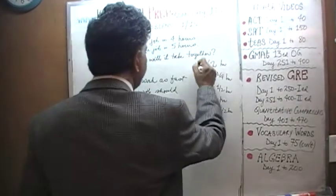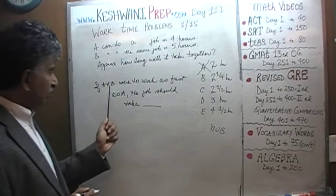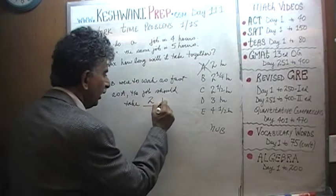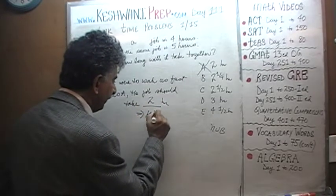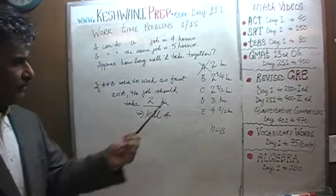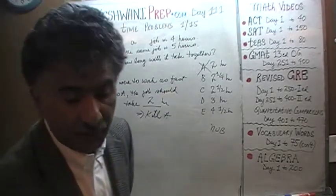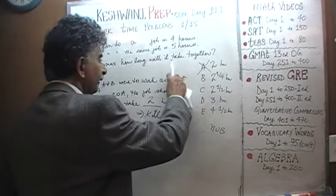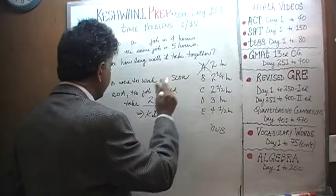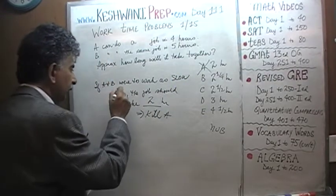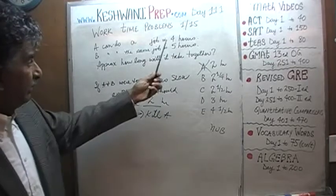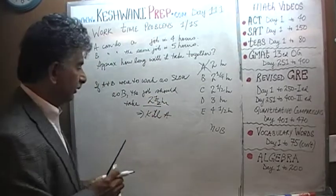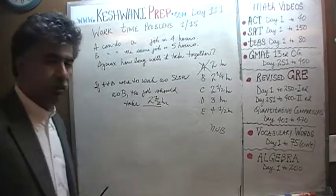That tells us that we can kill answer choice A — it cannot be two hours. Now let's look at the other scenario. If A and B were to work as slow as B — remember, B takes five hours — the job should take two and a half hours. Because in two and a half hours, B can do half the job and in another two and a half hours, A can do the other half if A were also to take five hours.